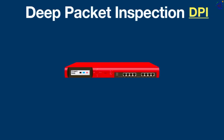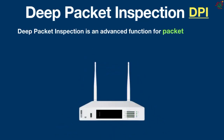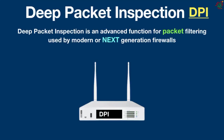Welcome back. Today we are going to be talking about deep packet inspection. Deep packet inspection, or DPI, is an advanced function for packet filtering used by modern or next-generation firewalls. The main purpose of DPI is to examine what kind of information is being sent and make sure it's all good and safe.